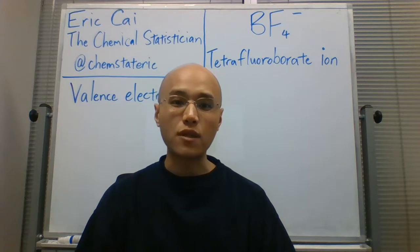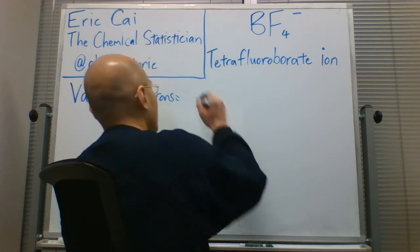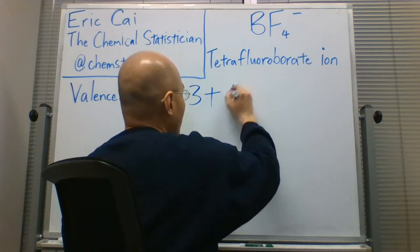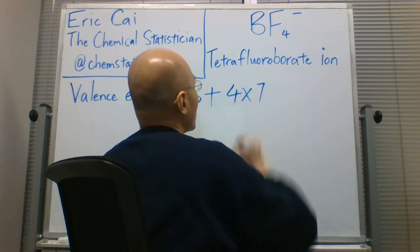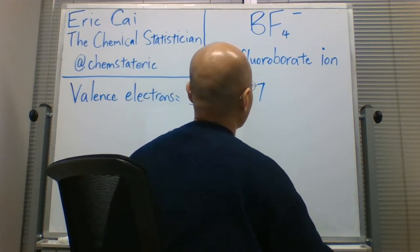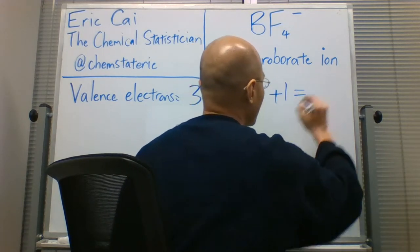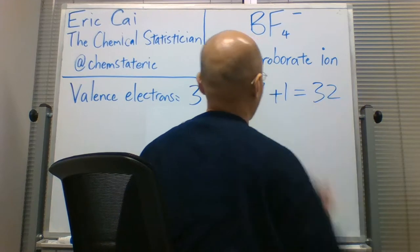As always, we need to begin by counting the number of valence electrons in the constituent atoms. We know that boron has three valence electrons, fluorine has seven valence electrons, and there's an extra electron from the charge of minus one. In total, we have 32 valence electrons.